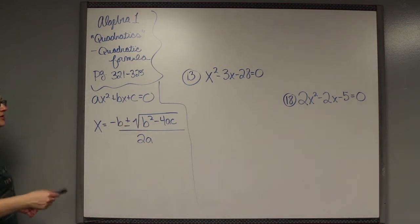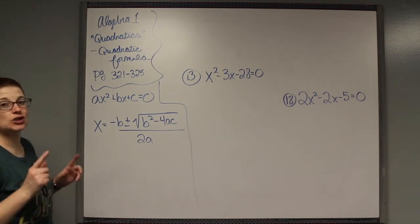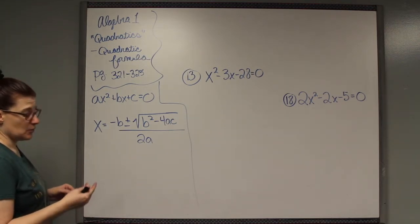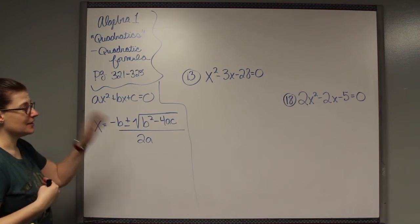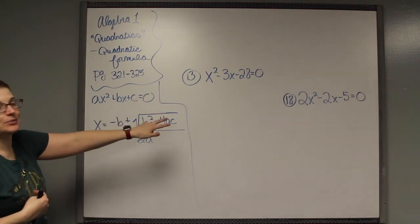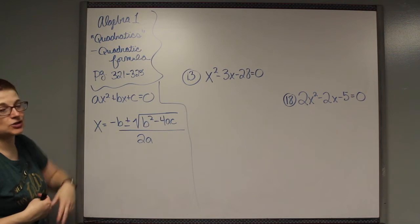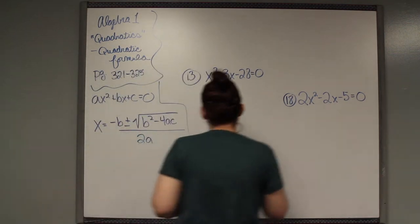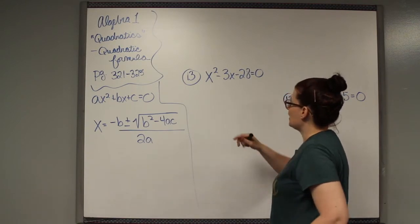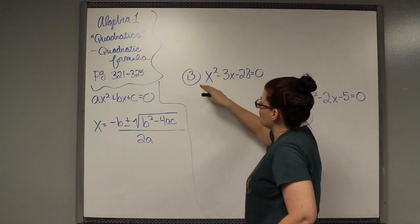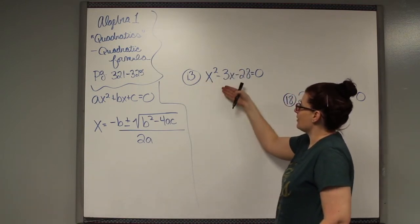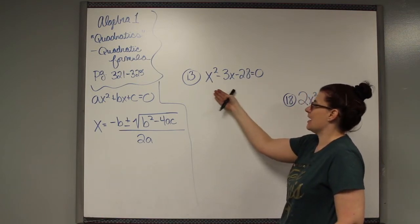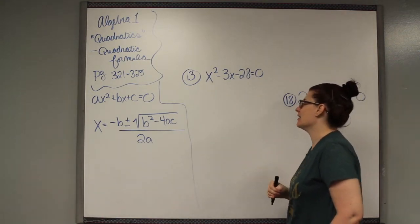The first part of this lesson like 1 through 13 they just want you to identify a, b, and c which I did not do any examples of, but I will identify them in these questions so that you can see what they are. So we want to make sure that our x squared, x, and our number are all on the same side and the other side is 0.